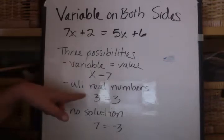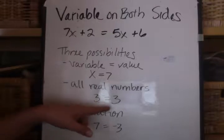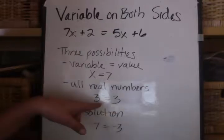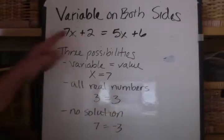The second possibility is that when you have variables on both sides, one possibility is that you can put any number for x, and it would make the equation true. And so in that sense, all real numbers can be put in the value for x, and the equation would be true. You'll recognize this when, after you solve your equation, you'll end up with something like this. You'll have some number equaling itself. When you see some number equaling itself, then all real numbers is the solution for this equation.